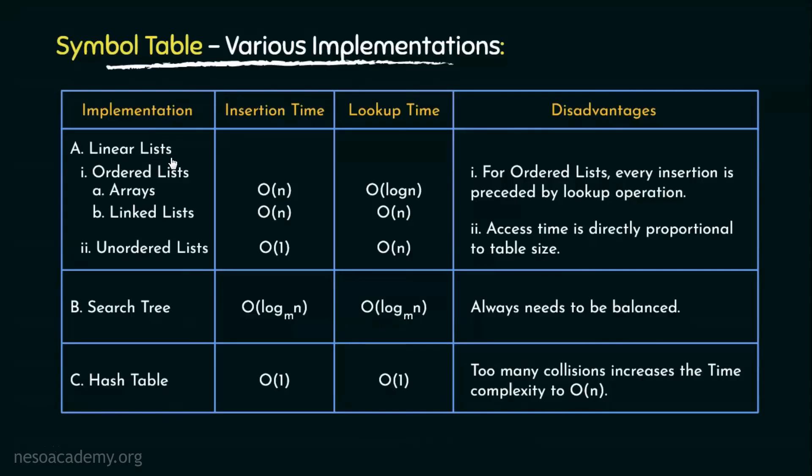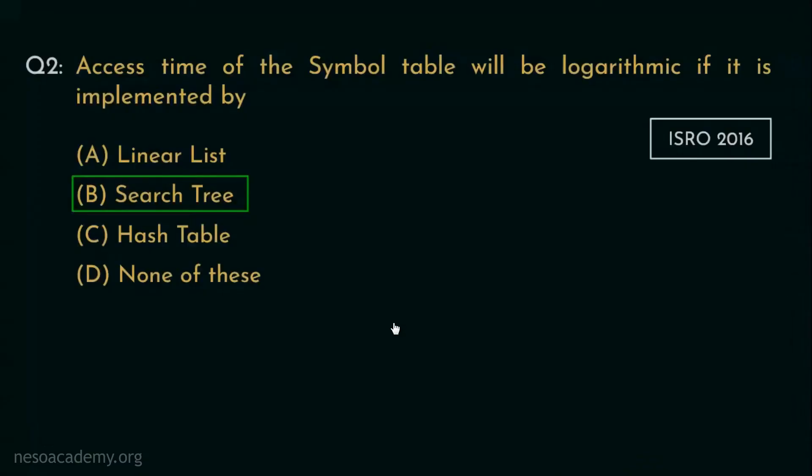Now for linear lists, we have three different lookup times, and for hash tables, the lookup or access time is order of 1. Only for the search tree, the access time is logarithmic. Therefore, option B is the correct choice.